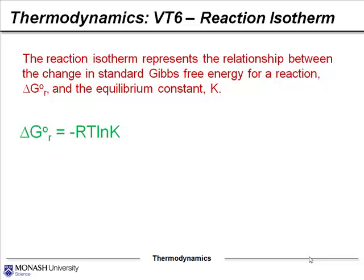This brings in one final equation in the thermodynamics topic, and that is the reaction isotherm. The reaction isotherm represents the relationship between the change in the standard Gibbs free energy for a reaction and the equilibrium constant K. In this formula, on the left-hand side we have the change in the Gibbs free energy of a reaction, and it's equal to negative RT multiplied by the natural log of the equilibrium constant K.